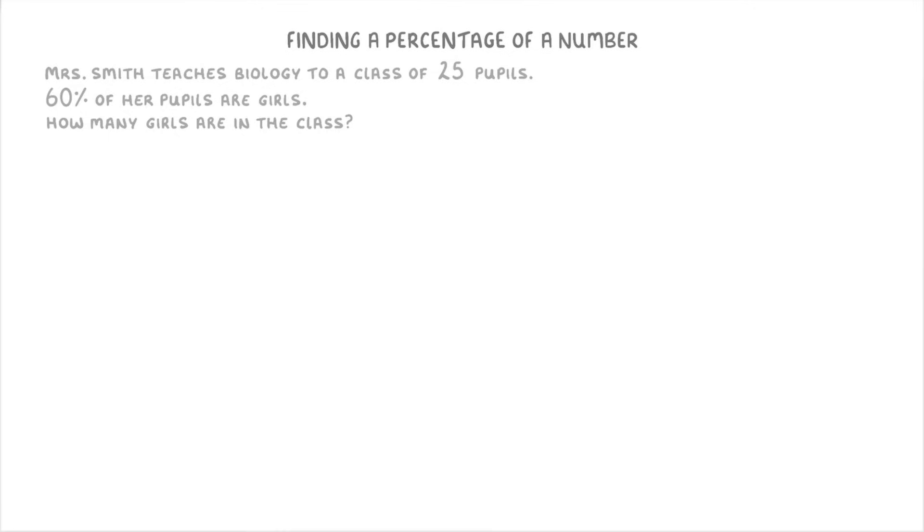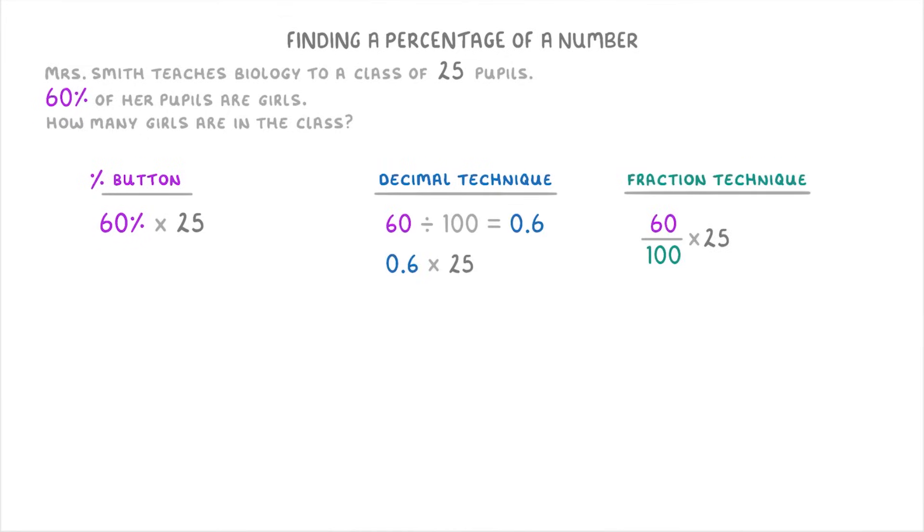So if you think about what we know, we know that there are 25 pupils, and 60% of them are girls. So to find the number of girls, we just find 60% of 25. And remember, we can do this using the percentage button, the decimal technique, or the fraction technique. All of which would tell us that there are 15 girls.